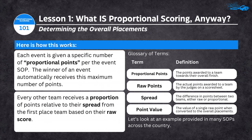Every other team after first place receives a portion of points relative to their spread from the first-place team, based on their raw score from the judges. Key terms: proportional points are what go toward your overall finish; raw points are the actual points awarded by judges on a score sheet; spreads are the difference in points between two teams — raw or proportional; and point values are the worth of a single raw point when converted to proportional points.